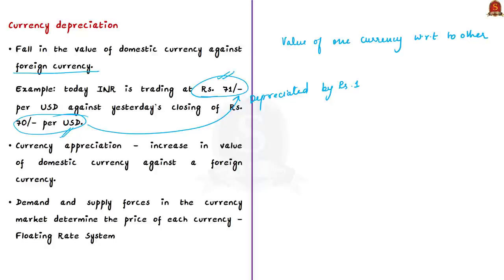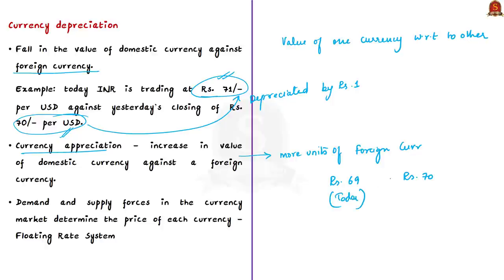You should also know about currency appreciation — it means an increase in the value of domestic currency against a foreign currency. When currency appreciates, we can buy more units of foreign currency than earlier. For example, if today INR is trading at ₹69 per USD against yesterday's closing of ₹70, then INR has appreciated by ₹1 per USD, meaning the trader pays one rupee less — ₹69 instead of ₹70.